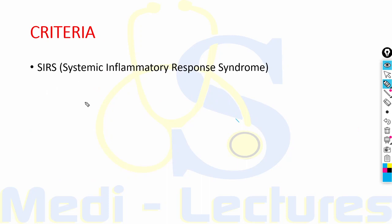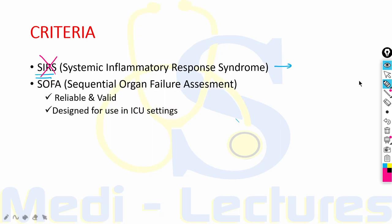SIRS, Systemic Inflammatory Response Syndrome, was used for many years but since 2016 after the arrival of SOFA score, SIRS is no more used for the diagnosis of sepsis. The score which is used now is SOFA score, which is Sequential Organ Failure Assessment. It is a reliable and valid score designed for use in ICU settings.